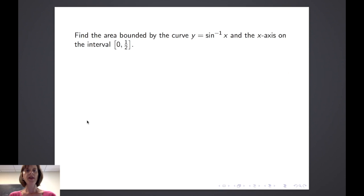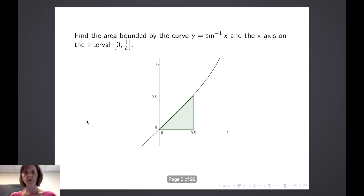Suppose we're asked to find the area bounded by the curve y equals the inverse sine of x and the x-axis on the interval from 0 to 1 half. Here we see a graph of the curve y equals the inverse sine of x and we see the interval from 0 to 1 half, so we're interested in the area that's shown here in green.